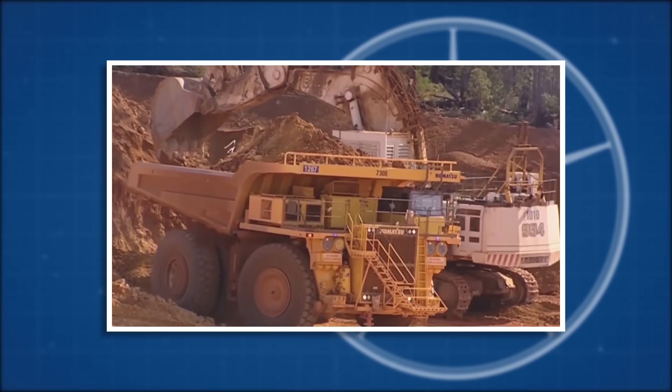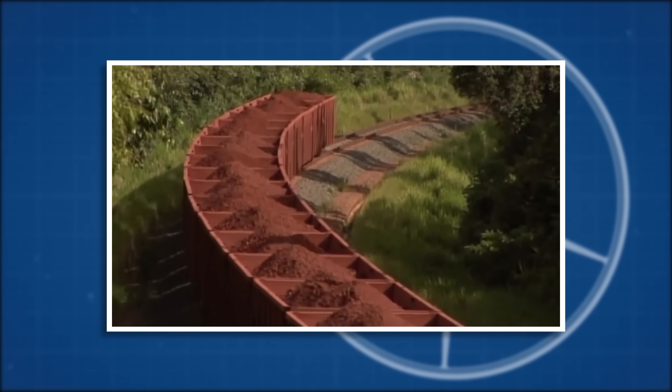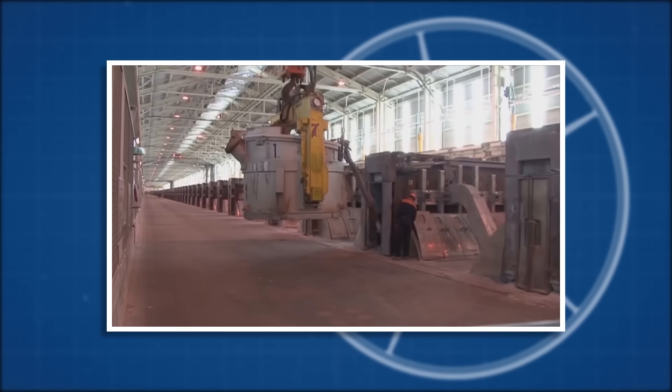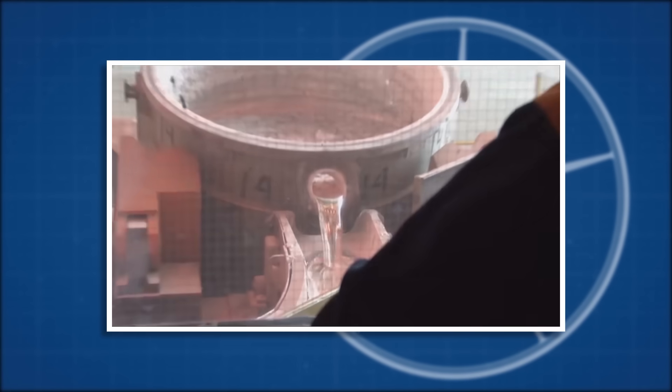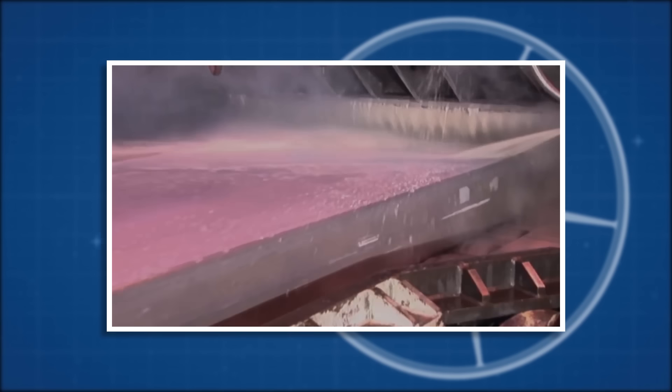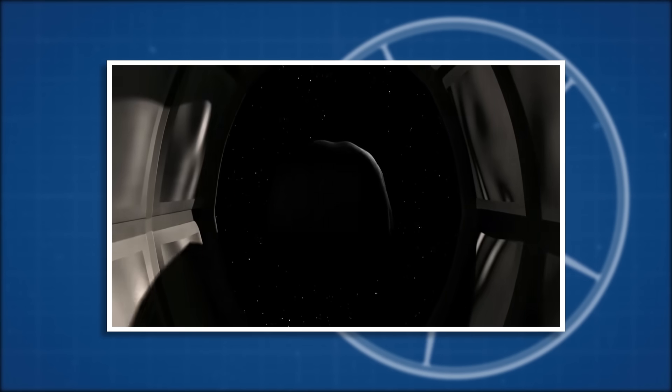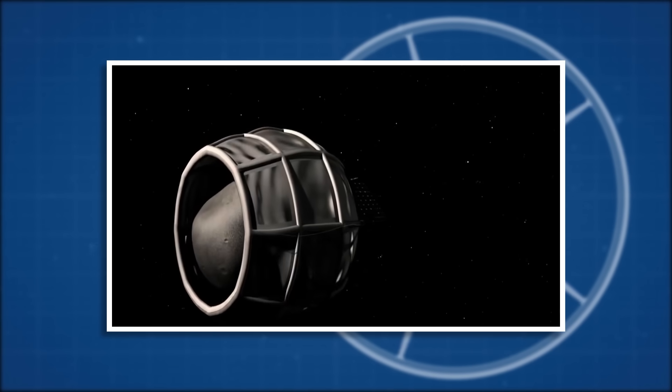But we run into some problems when we realize there isn't enough aluminum in the world to build this thing. It would take at least 10 years worth of the world's total aluminum production just to build the structure. This would cause a huge surge in the cost of material. An alternative method could be sourcing the materials from space. This could reduce the launch costs and there is plenty of metallic material available on the moon and near Earth asteroids.